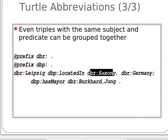We say 'located in' and give the first value, then use a comma rather than a semicolon, then give the second value. For email: 'has email' then email one, comma, email two — ending with a semicolon. Then for a new predicate we continue as before.